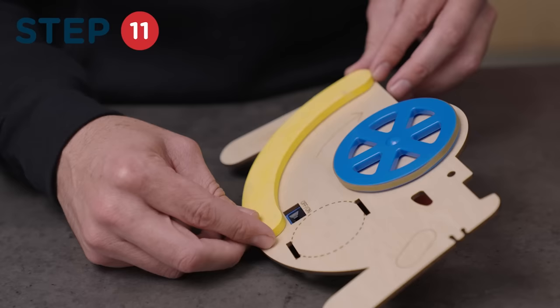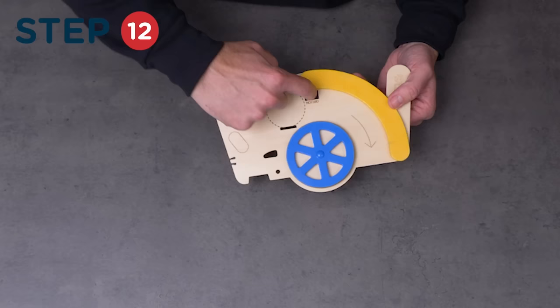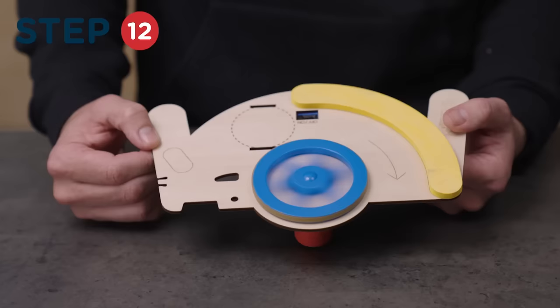Then, turn your switch to the on position and make sure your flywheel is spinning in the same direction the arrow on the wood is pointing.